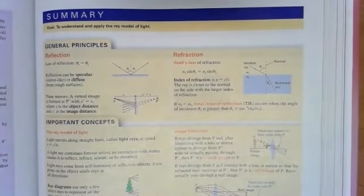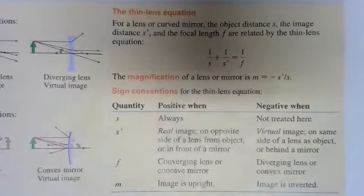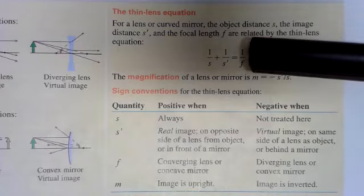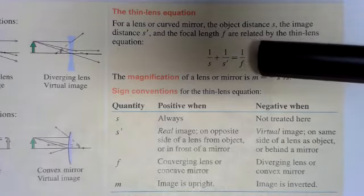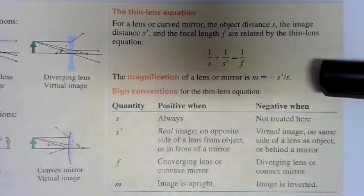So this is on page 593. It's actually a summary page. I'm going to scroll down here. Perfect. And so there's that thin lens equation here. Again, notice how Knight uses S and S prime. Magnification there.